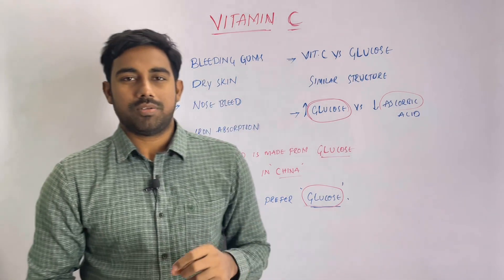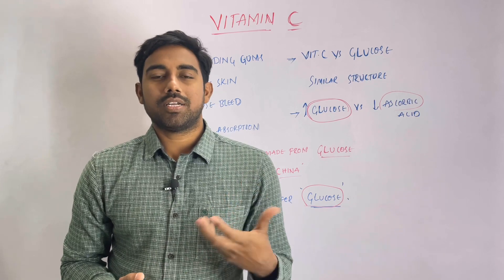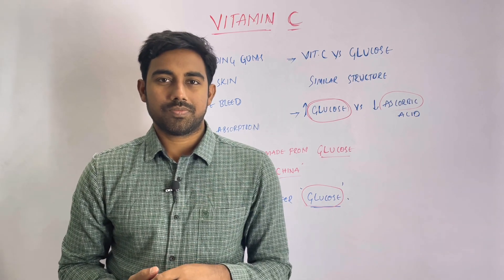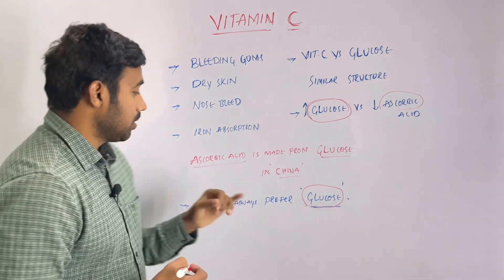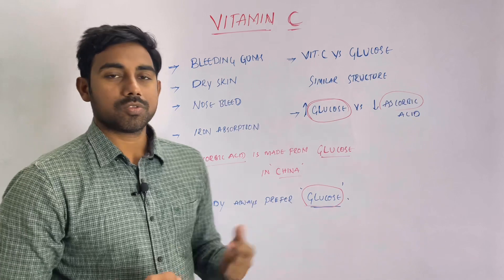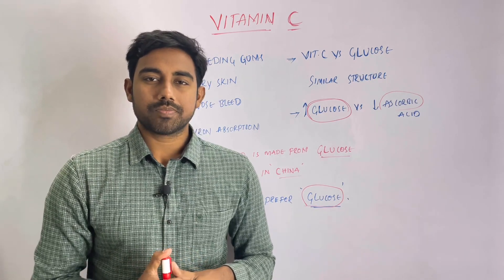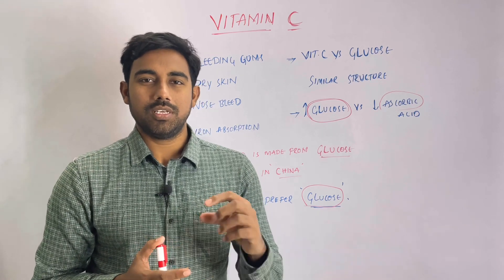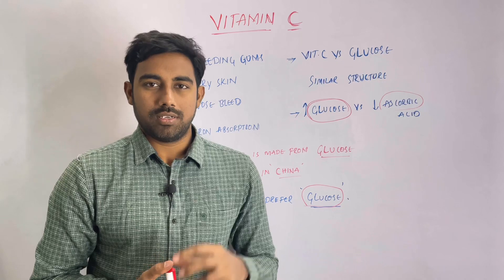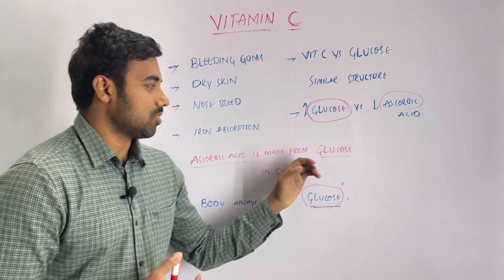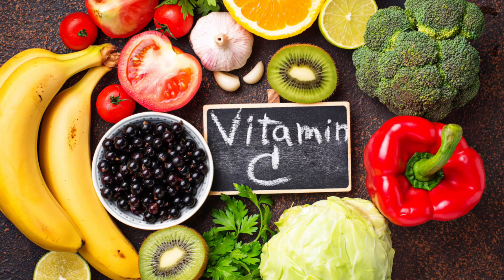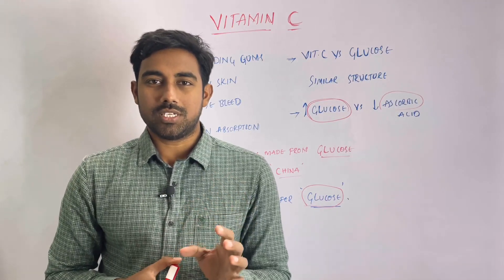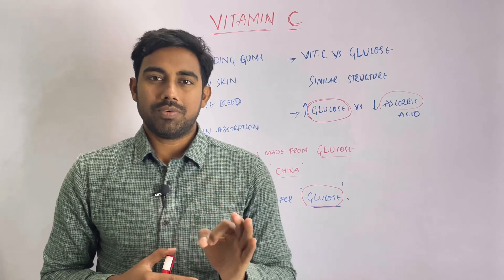Vitamin C is very important in your body. Recently there was a case study. Ascorbic acid is made from glucose — in China, there is a company that produces ascorbic acid from glucose. These are the capsules, tablets, and the form it comes in. You can also use it naturally in your body. In terms of natural sources, oranges and liver are good sources. In terms of how you use vitamin C, both natural sources and capsules provide benefits.